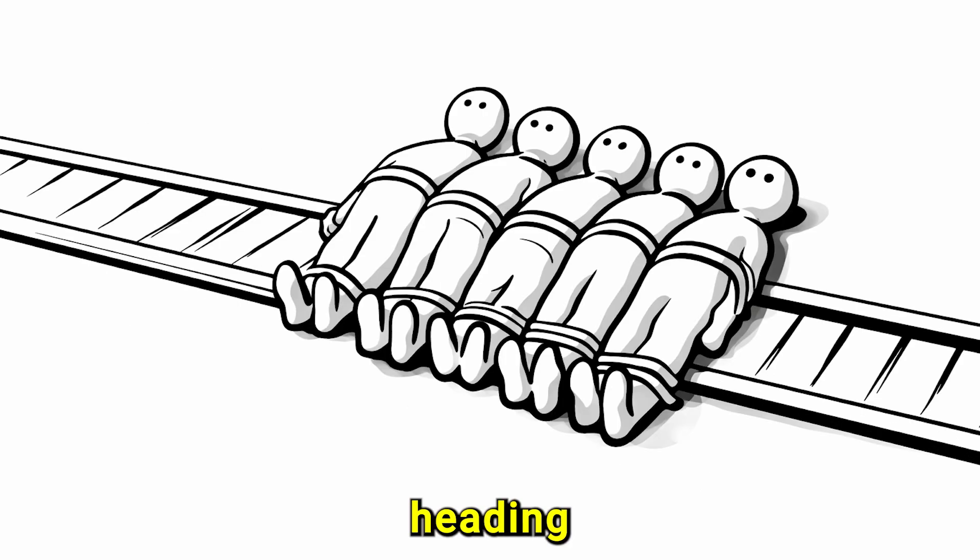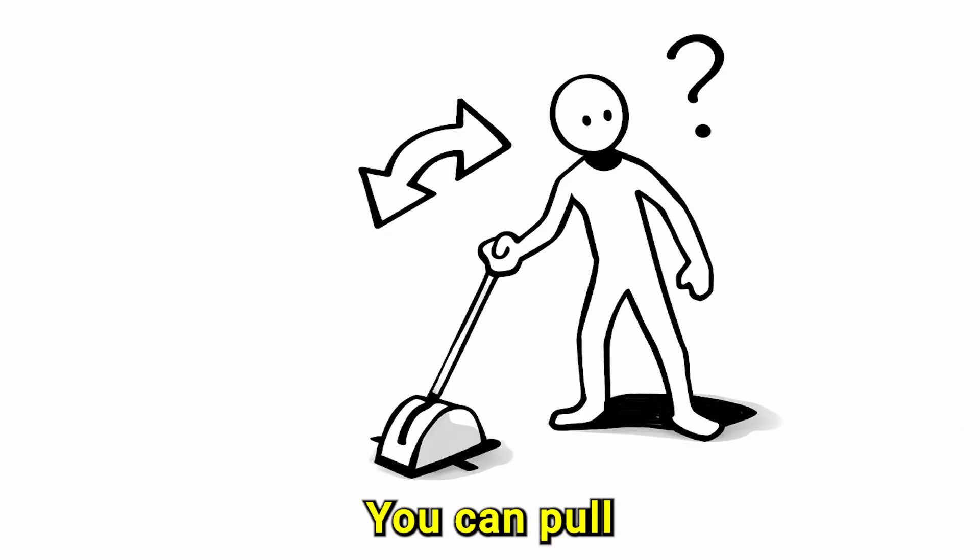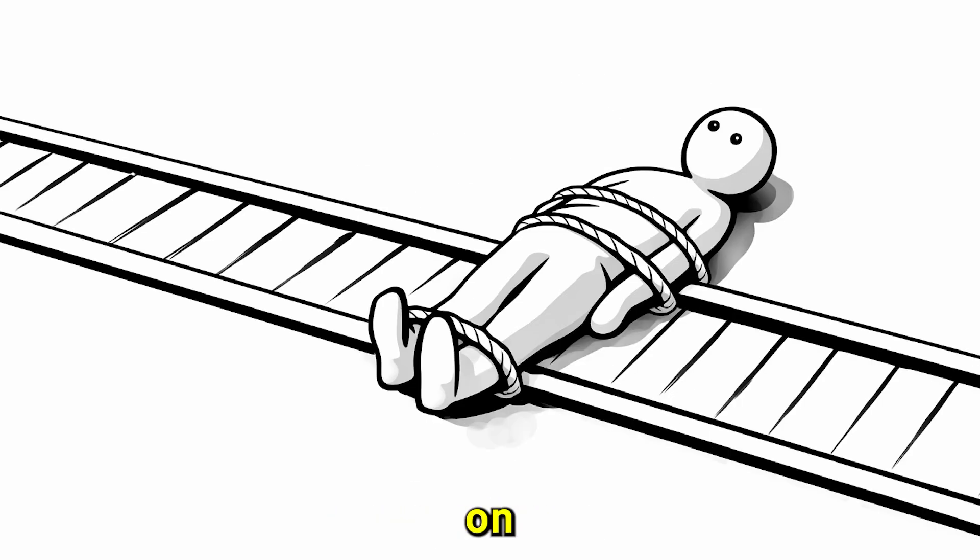A train is out of control and heading towards five people. You can pull a lever to change its path, but then it will hit one person on the other track.